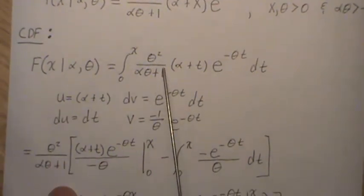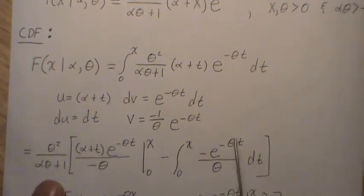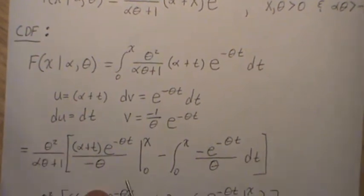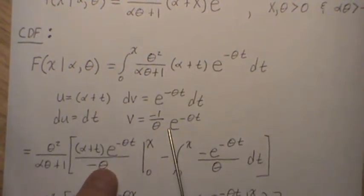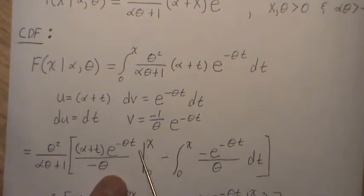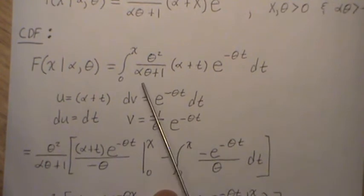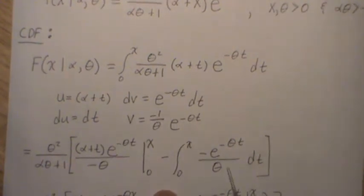So then, remember this constant comes out front, and we just bracket it. Then this is UV, so U times V, and evaluated from 0 to X, so we'll plug those in. And then it's minus this integral, and it is V DU, and that's what we put here.